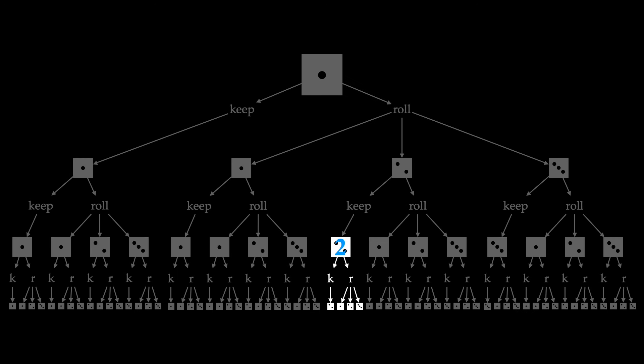Putting this back into our tree, the utility for being in a state where 2 is on the die with one turn left is two. For the other base-level states, the utility is similarly just the value on the face of the die — so for a state with 1 showing and one turn left, the utility is one. The same reasoning extends to two and three.